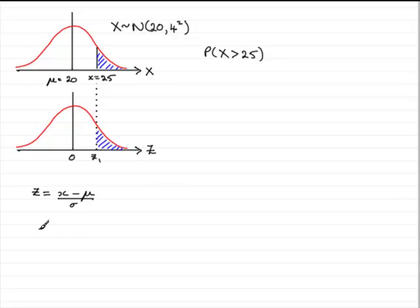So z1 equals the observed value 25 minus the mean 20, all divided by the standard deviation which is 4. Working this out, you'll find that z1 equals 1.25.